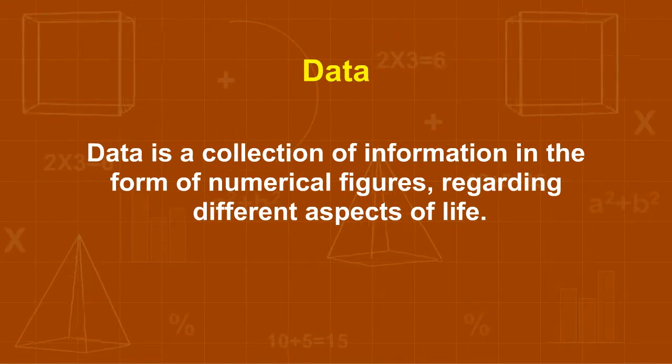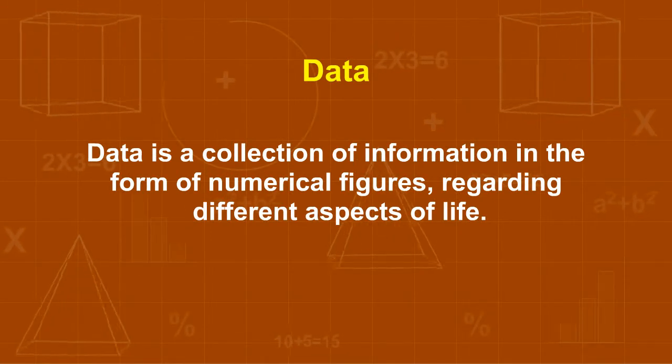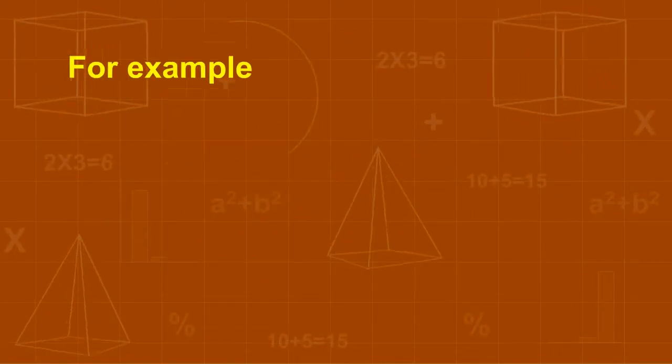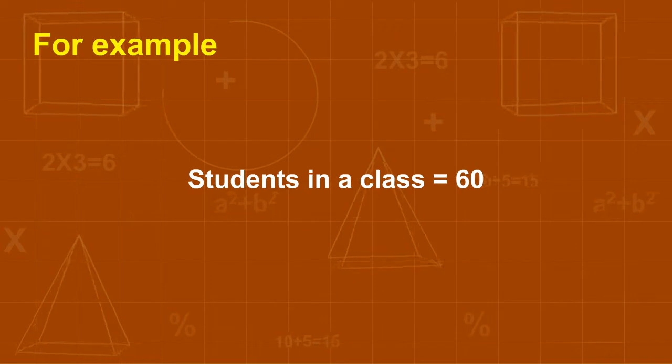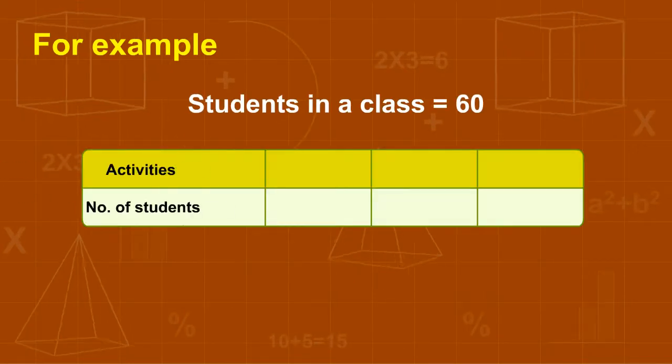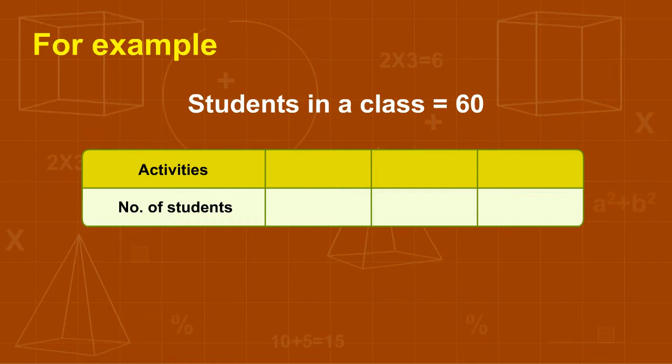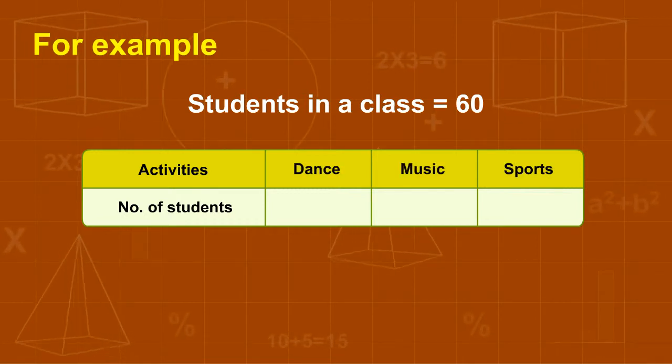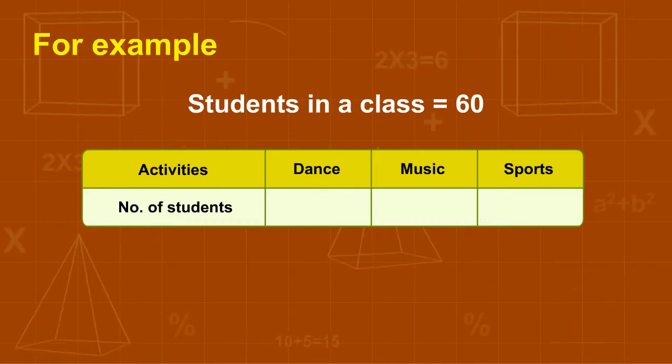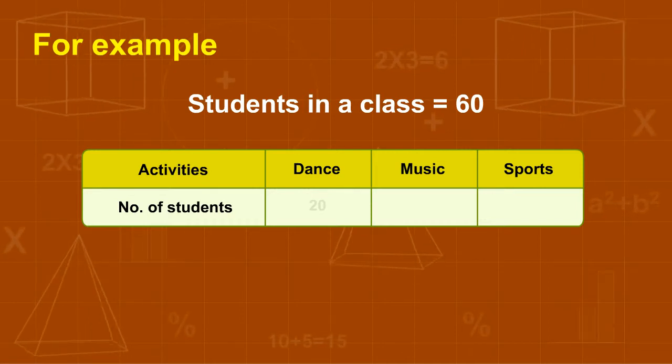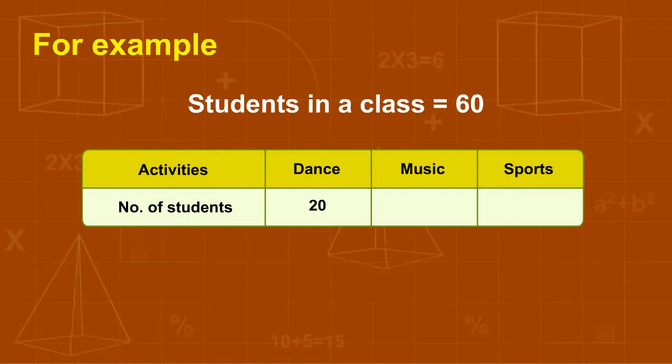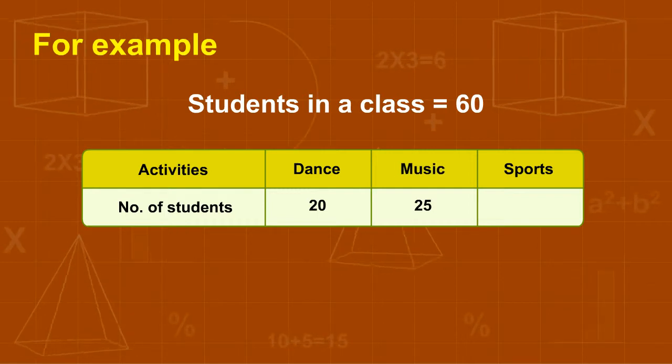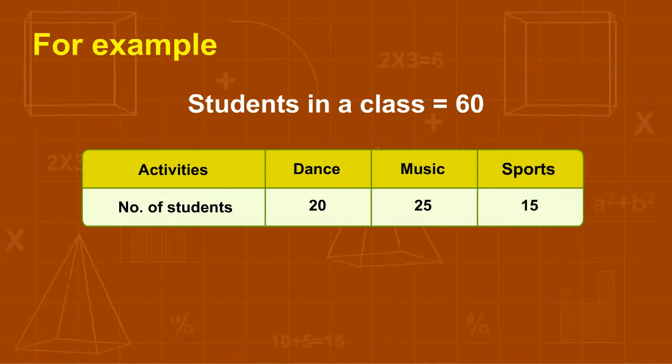Data is a collection of information in the form of numerical figures regarding different aspects of life. For example, there are 60 students in a class. During an annual day, all the students participate in the activities such as dance, music and sports. So the data regarding this is as shown. We can say that 20 students participated in dance, 25 students participated in music and 15 students participated in sports.